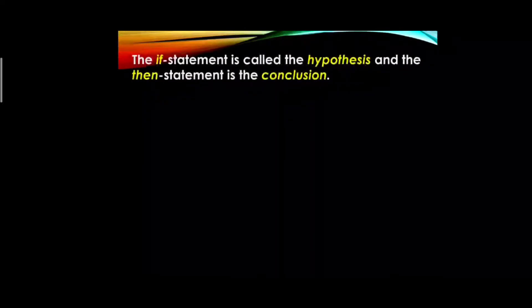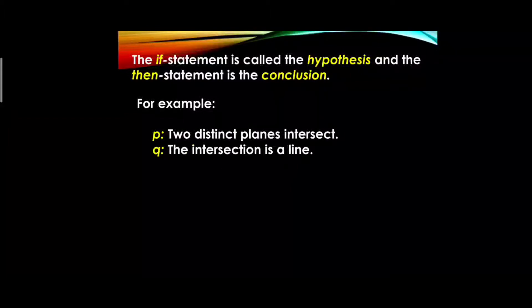In an if-then statement, the 'if' part is called the hypothesis or antecedent, and the 'then' part is called the conclusion or consequent. For example, given proposition p — 'two distinct planes intersect' — and proposition q — 'the intersection is a line.'